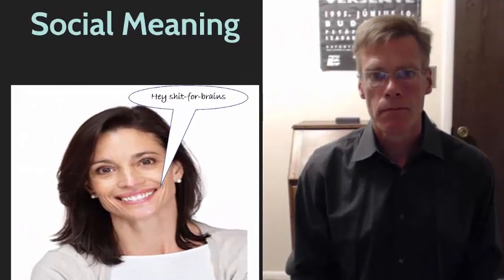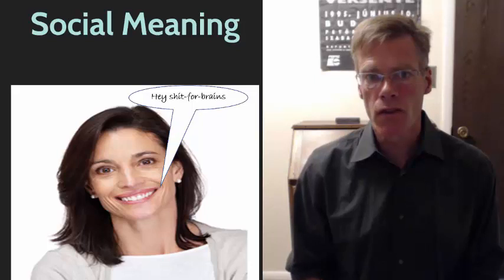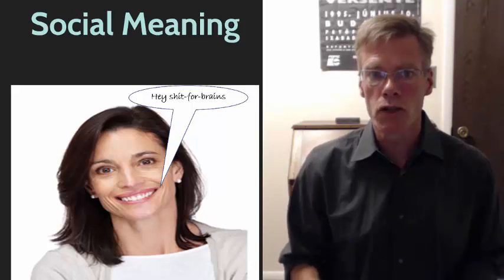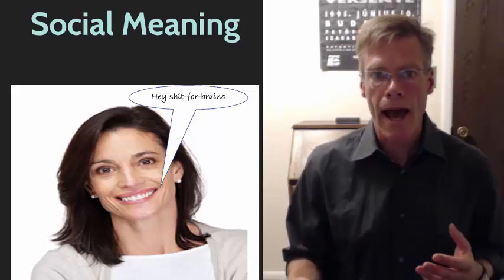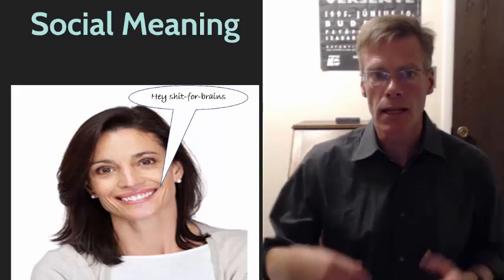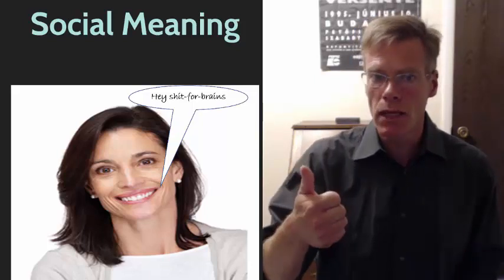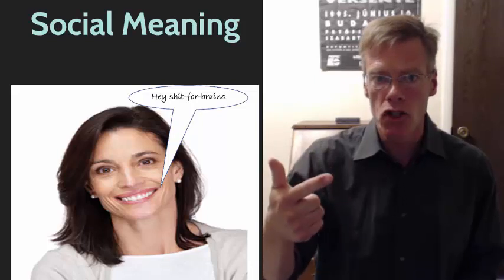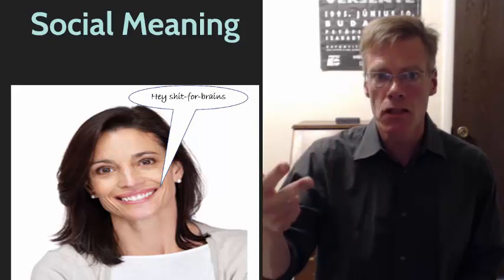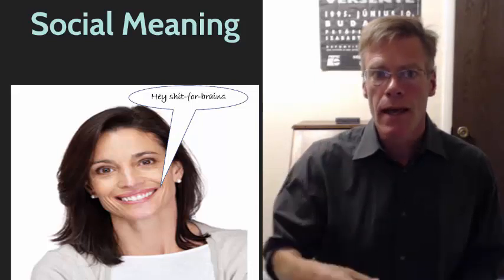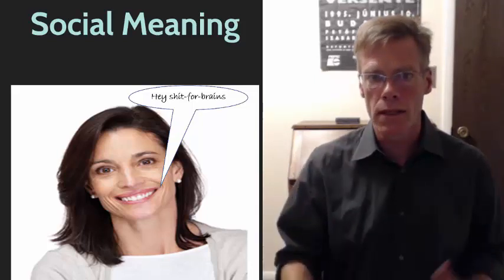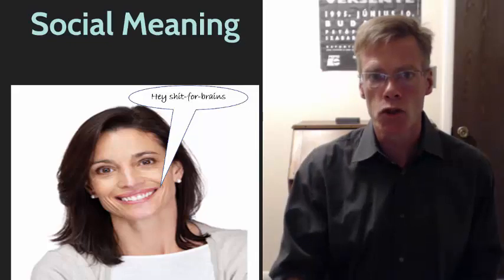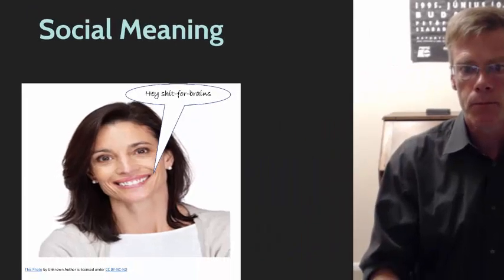Social meaning. In a previous video we introduced the idea that there are three aspects of meaning: informational meaning, emotional meaning, and social meaning. In this video we're going to focus on social meaning.